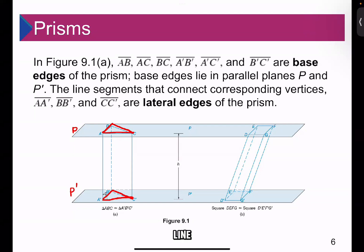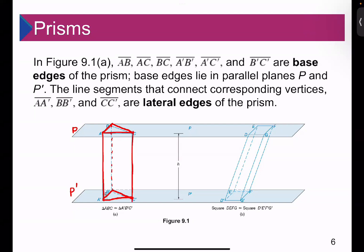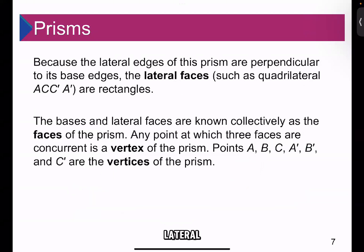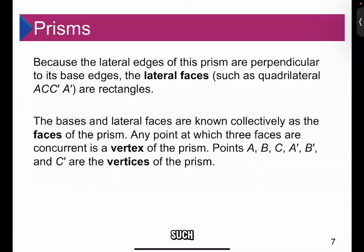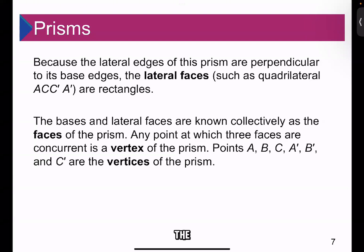The line segments that connect corresponding vertices — A to A', B to B', C to C' — are the lateral edges of the prism. Because the lateral edges of this prism are perpendicular to its base edges, the lateral faces, such as the quadrilateral ACC'A', are rectangles. The bases and lateral faces are collectively called the faces of the prism.